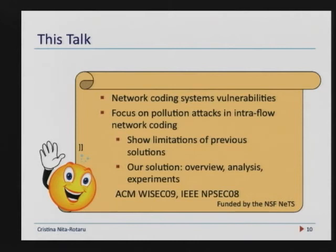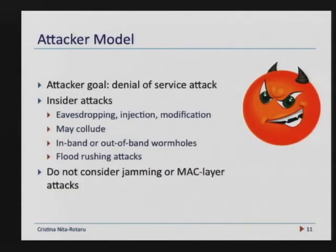In the next few minutes I want to give you some idea of what type of vulnerabilities can happen in systems like these. I will focus on one particular attack that is both new and very damaging, keeping the discussion in the context of intra-flow network coding systems — the less complex class. I'll show you limitations of prior work, what worked and didn't, our solution, and experimental results. To keep things clear, I mean network coding at the routing level: I assume the MAC layer is trusted, and the attacker operates at the routing level — eavesdropping, injection, modification, and other wireless-specific attacks.